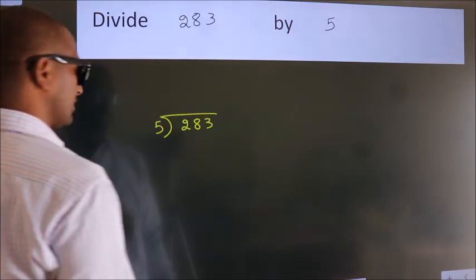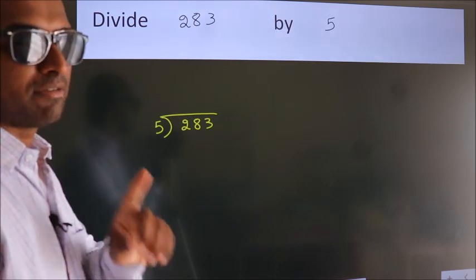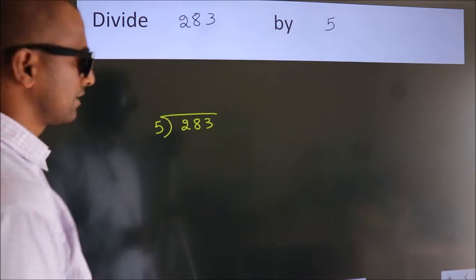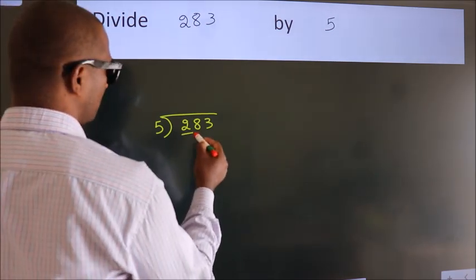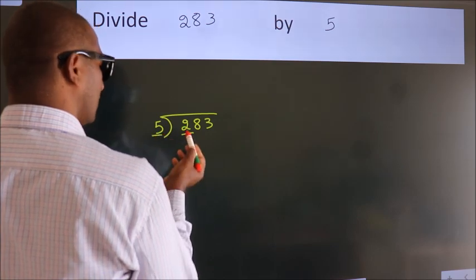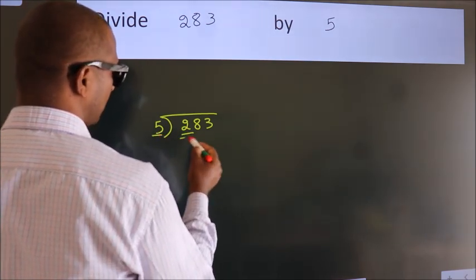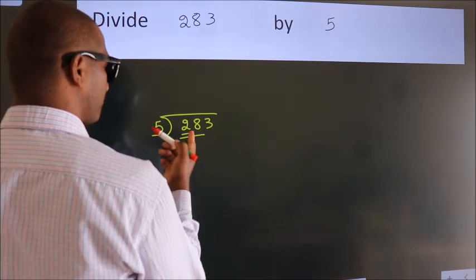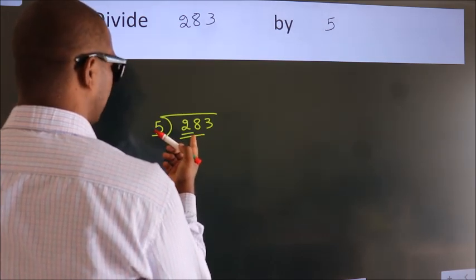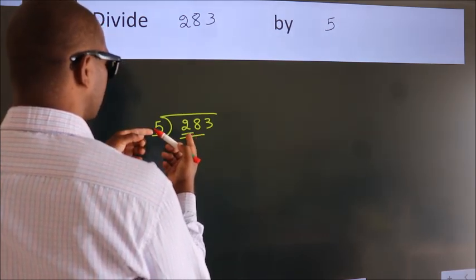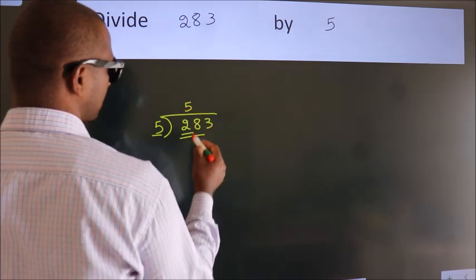This is your step 1. Next, here we have 2. Here 5. 2 smaller than 5. So, we should take 2 numbers. 28. A number close to 28 in 5 table is 5 5s 25.